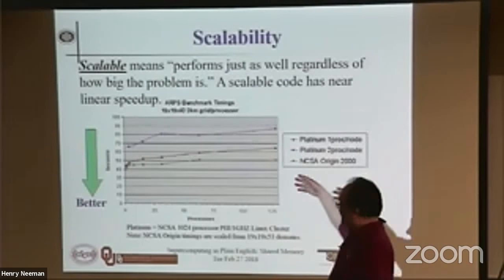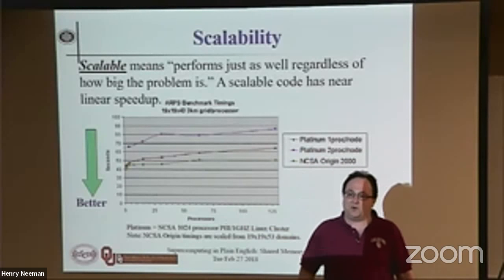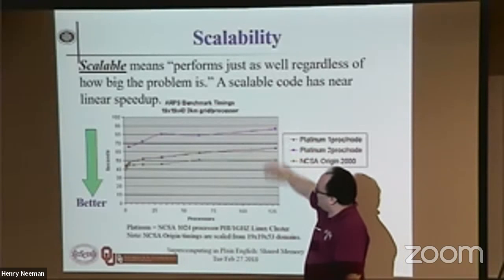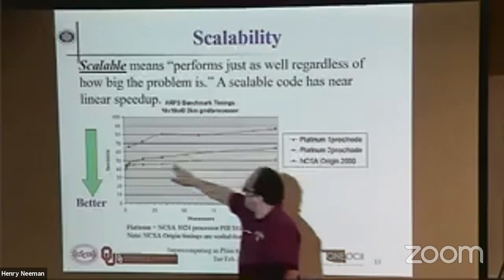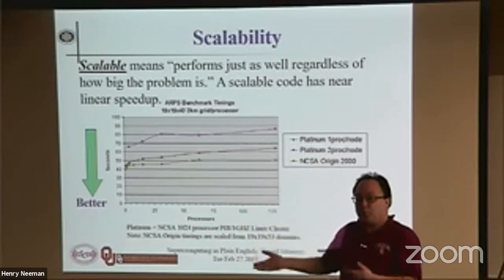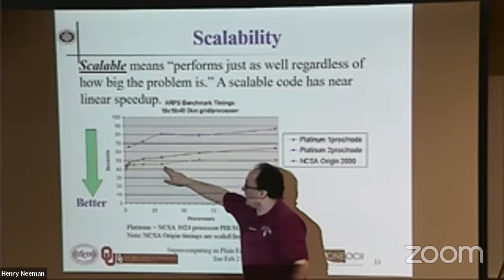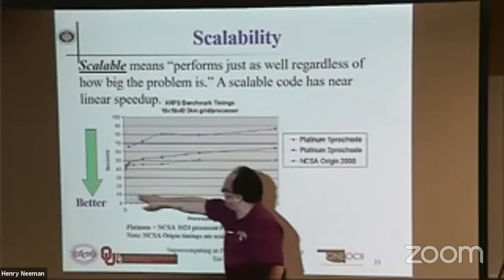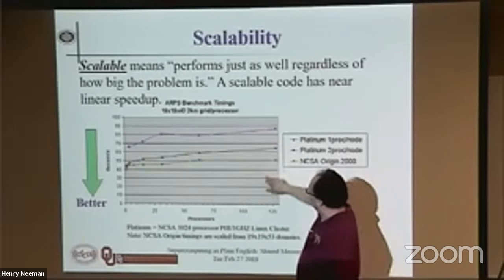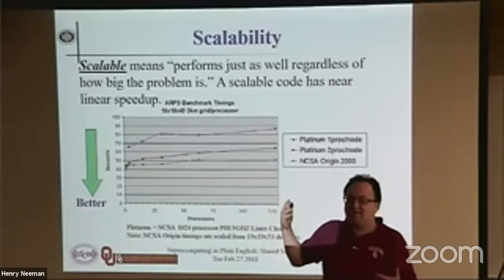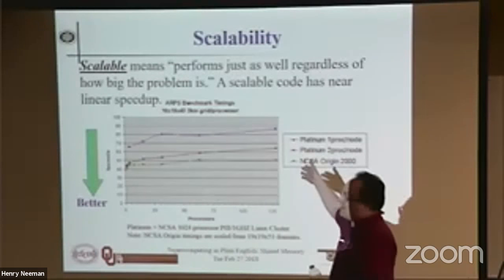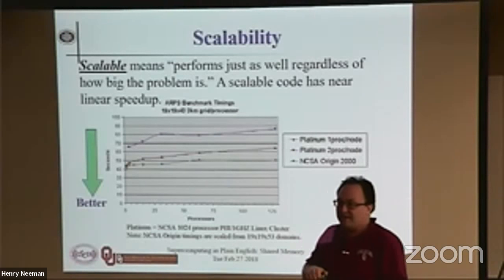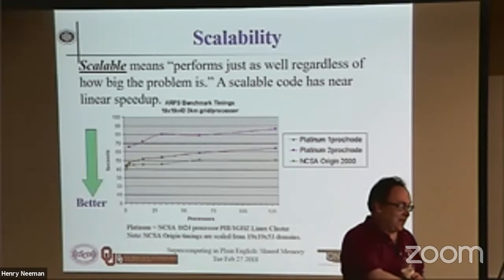Here's a graph of an old code on an old machine — it beautifully illustrates the principle. As I add more processors and grow the problem size proportional to the number of processors, I'm seeing more time spent on overhead. Running on a single processor: 40 seconds. Running on 128 processors: about 51 seconds. So 11 of those seconds are spent doing parallel overhead. At 128 processors I've got about 25% overhead — not the end of the world, and not that unusual either.